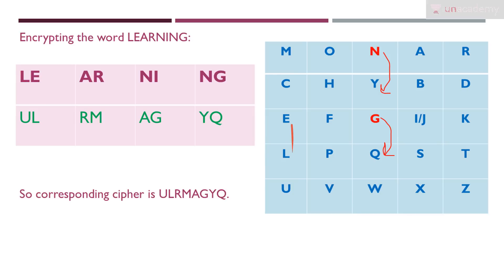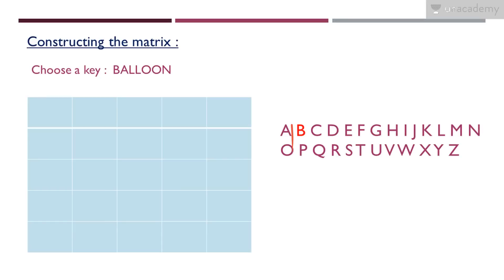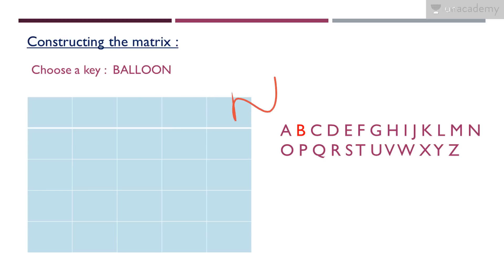If your keyword has repeating letters, like 'balloon', there is something to take care of: repeating letters in the keyword are not written again in the matrix. So for balloon we write B, A, L, then we skip the second L, then write O, N — and continue with the remaining alphabets C, D, E, F, G, H, IJ, K, L and so on in order. For encryption apply the rules; for decryption just do the reverse operation.